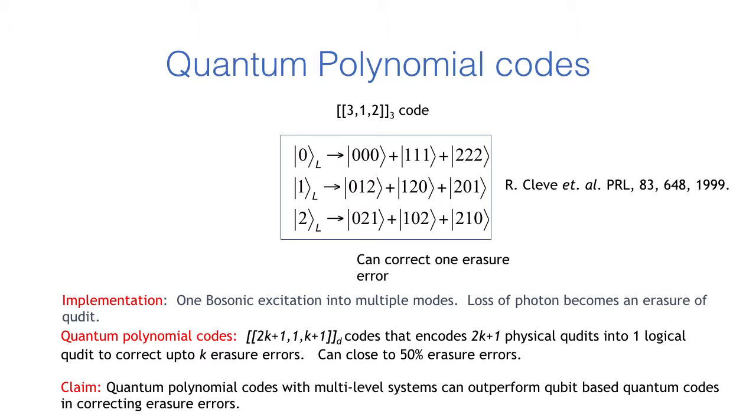In this paper, we propose to use quantum polynomial codes for correcting erasure errors. The simplest example is the 3-qubit code which can correct one erasure error. The implementation we have for this code is to store a bosonic excitation into multiple modes so that loss of a photon corresponds to a vacuum state leading to an erasure error.